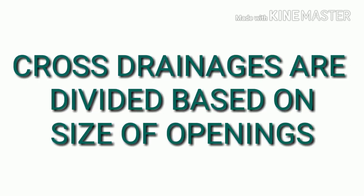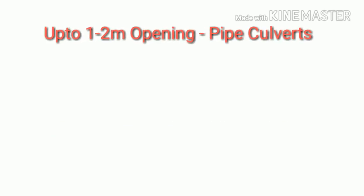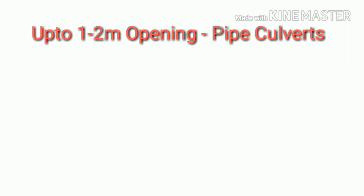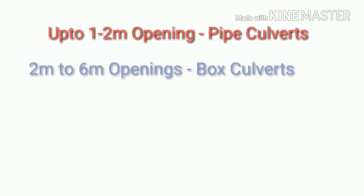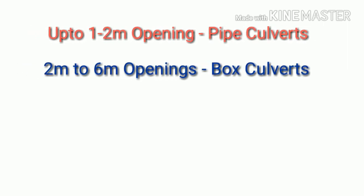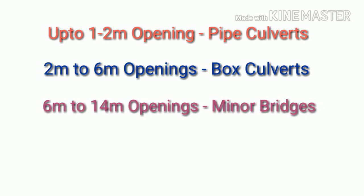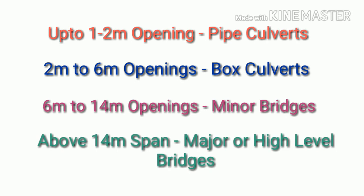Cross drainages are divided based on size or width of openings. Up to 1 to 2 meters, pipe culverts are used. From 2 meters to 6 meters, box culverts are used. From 6 meters to 14 meters, minor bridges are constructed. Above 14 meters span, major high-level bridges need to be constructed.